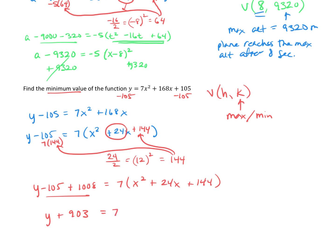That 7 is going to stay there, and we're going to factor this. Factors of 144 that add up to 24, 12 and 12. So x plus 12 squared. Let's get the y alone by subtracting 903 from both sides. So we have y equals 7 times x plus 12 squared minus 903.